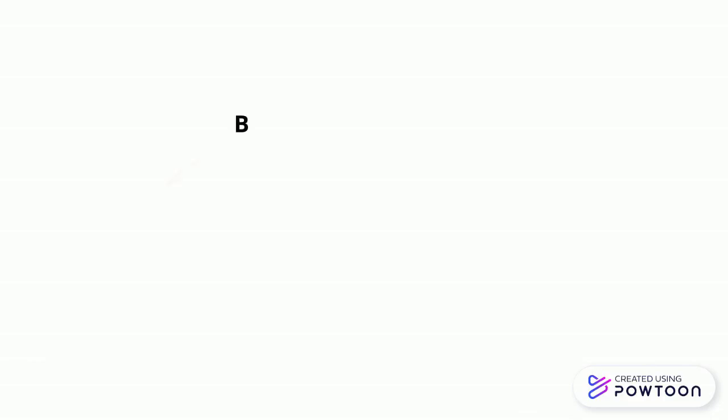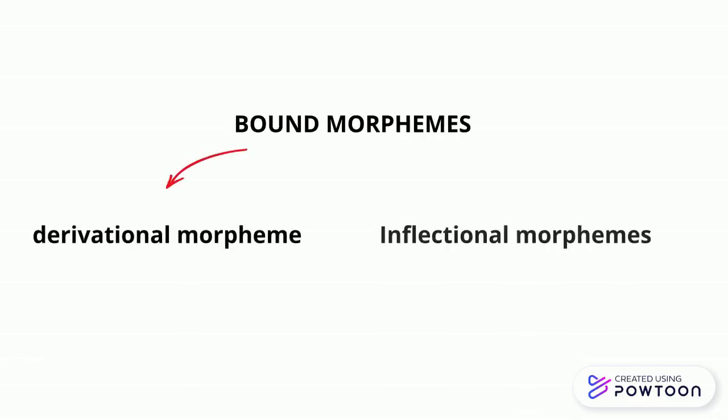Inflectional morphemes are morphemes that are used to indicate the aspects of the grammatical function of a word. Examples of inflectional bound morphemes include: -er, -s, -er, and -ed.